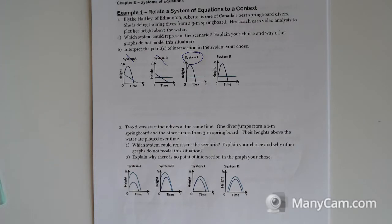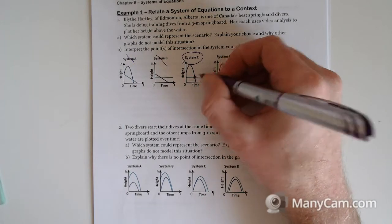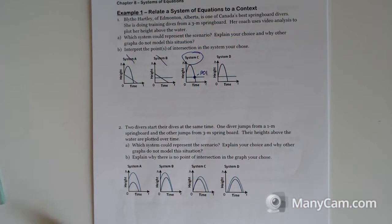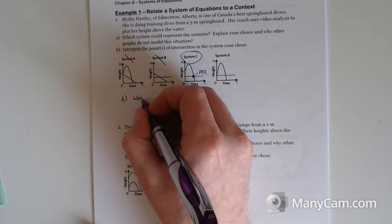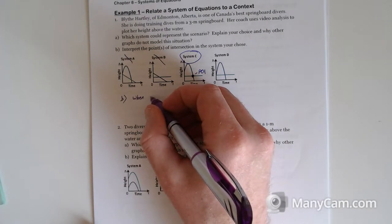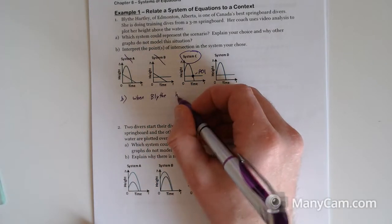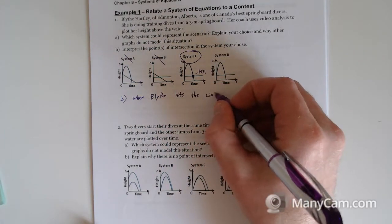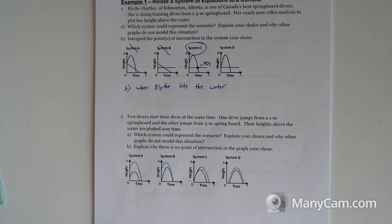Interpret the points of intersection in this system of equations. Well, there's one of them. That's our point of intersection. And what does it stand for? When Blythe hits the water. Not a trick question. That's when she touches the water, when those two lines touch.